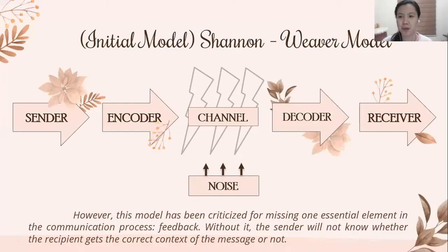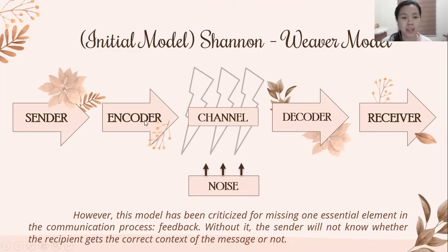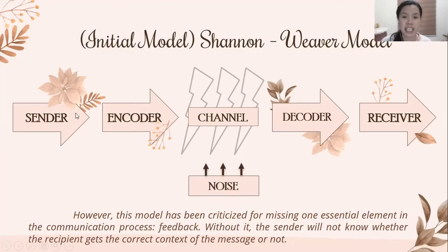Let's have the initial model developed by Shannon and Weaver. It has the following elements. We have the sender, who is the information source. We have the encoder, which is a machine that converts the idea into signals or binary digits — however, it can also be a person that converts the idea into spoken or written words or actions.